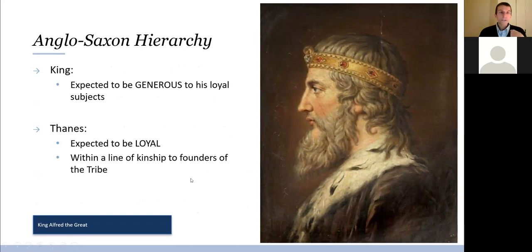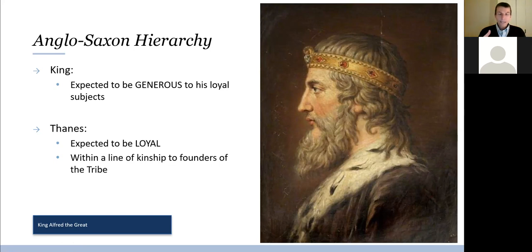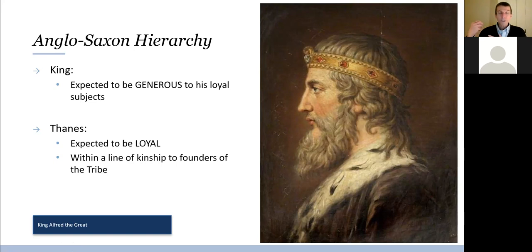Anglo-Saxon culture was built around the relationship of a thane and a lord or king. A chief or lord had thanes who needed to be loyal, and the king's job was to be generous with any spoils acquired through conquest — to be a giver to the people in his sway — and they in turn were there to be loyal, fight for him, and do his bidding.